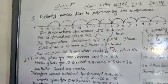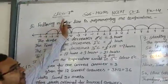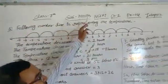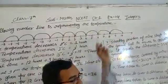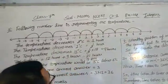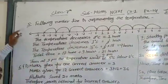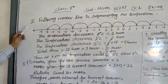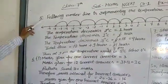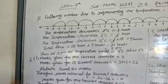Good morning students. This is Class 7 Math, Chapter 1, NCERT, Exercise 1.4. In the previous video we learned up to question number 4. Now we will start question number 5.